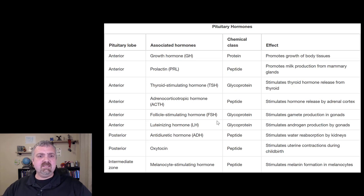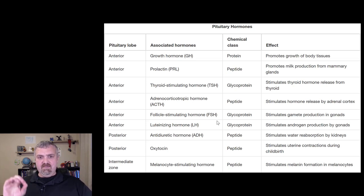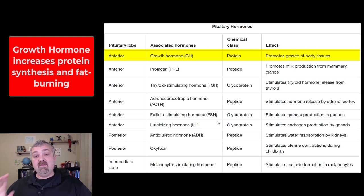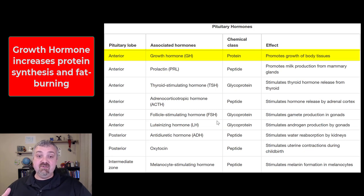We're going to start with the pituitary hormones. The pituitary gland is called the master gland for a reason because this is where a lot of hormones come from. The first one is growth hormone. Like the name implies, it leads to growth. It does so by increasing protein synthesis. The other key thing growth hormone does is increase lipolysis, or the breakdown of fat for fuel. So growth hormone leads to a building up of muscle and a loss of fat.